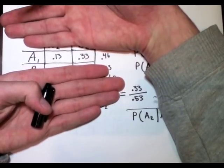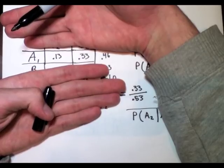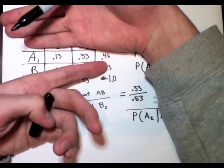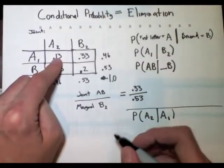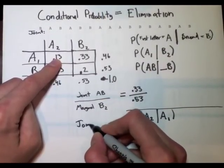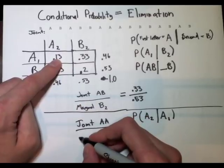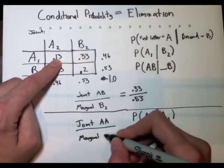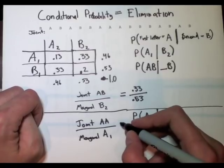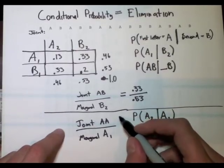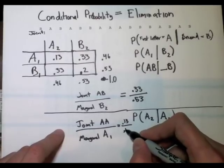So now we've only got three numbers to think about. We've got the total number of, the total frequency of events that are, that begin with A, and that's 0.46. And then we've got AA, 0.13, and AB, 0.33. So again, it's going to be the joint, joint, frequency of AA over, marginal that is A sub 1, meaning this number over this number AA over A1, which is equals 0.13 over 0.46.